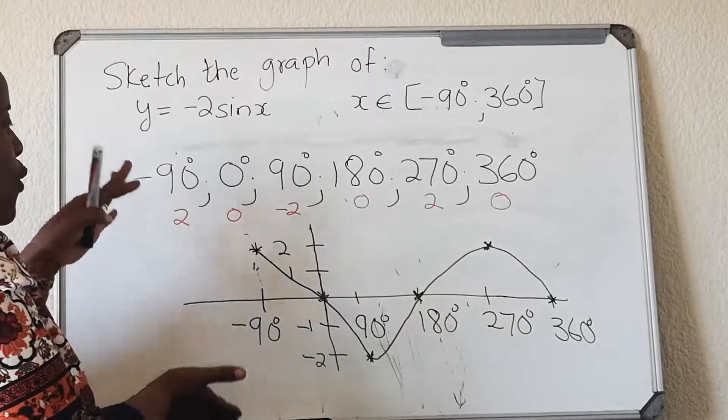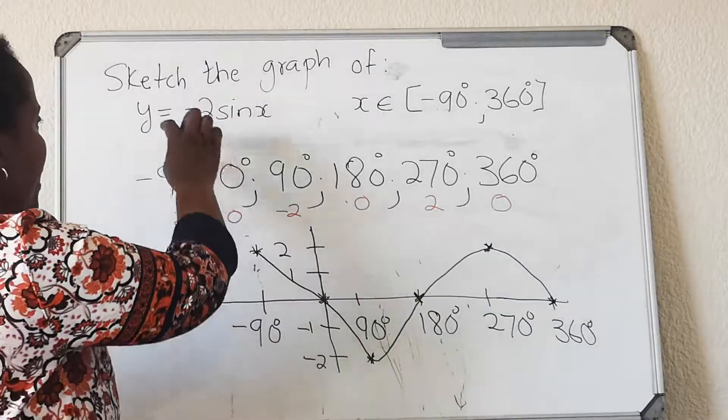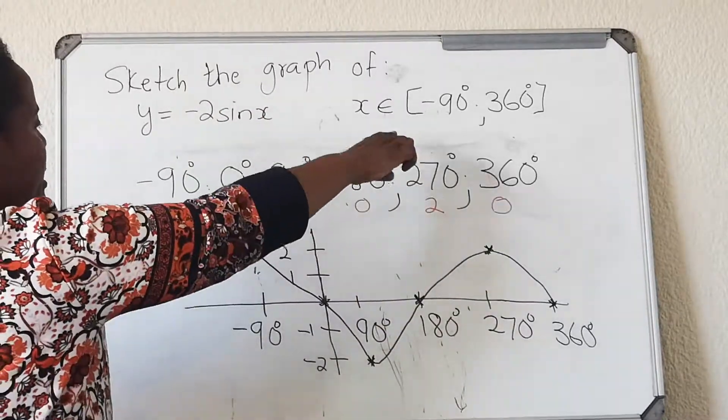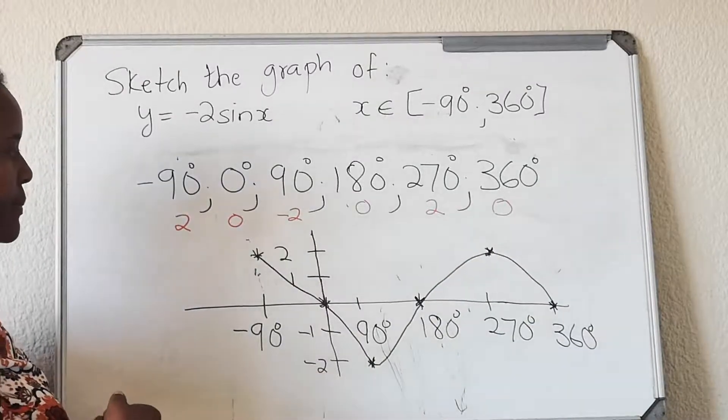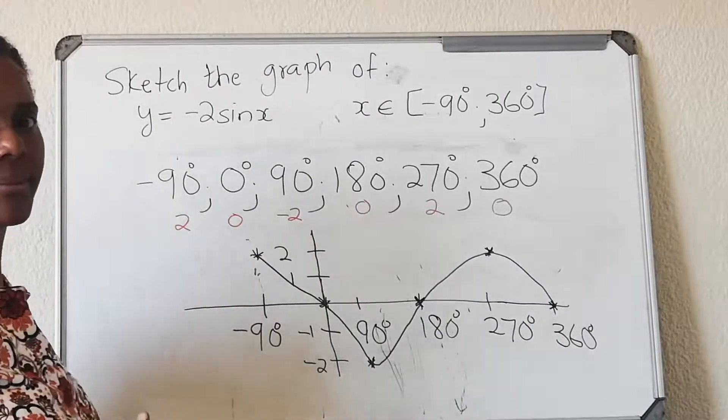So if you have that, and then you multiply the y-intercept, you get the correct graph. Thank you. That's the end of our lesson.